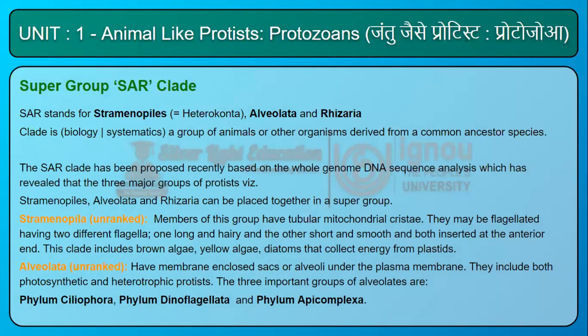Stramenopiles — unranked members of this group have tubular mitochondrial cristae. They may be flagellated, having two different flagella: one long and hairy and the other short and smooth, both inserted at the anterior end. This clade includes brown algae, yellow algae, and diatoms that collect energy from plastids.